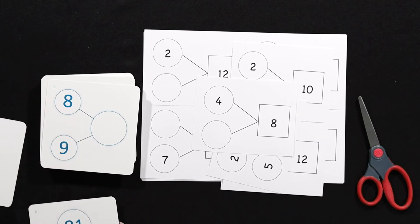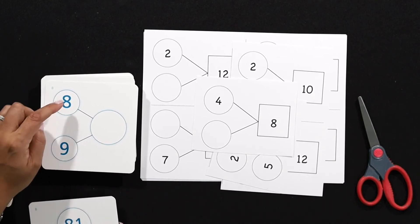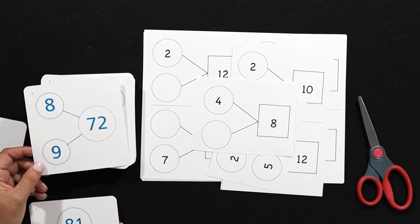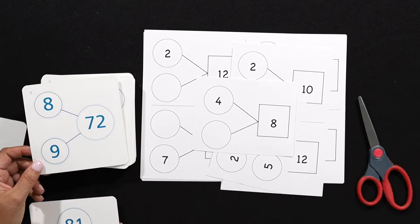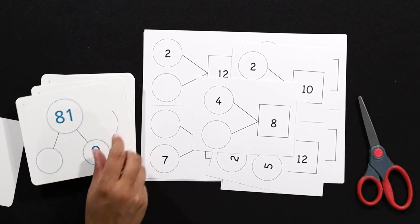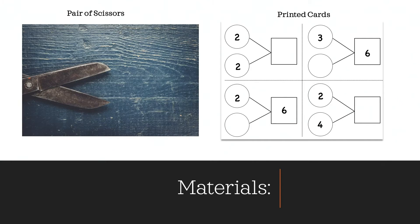This one here is going to be a multiplication statement. So eight groups of nine or nine groups of eight is 72. And so students can flip those over to look at them. So they have, depending on how you're looking at it, the multiplication or the division that might go with it.